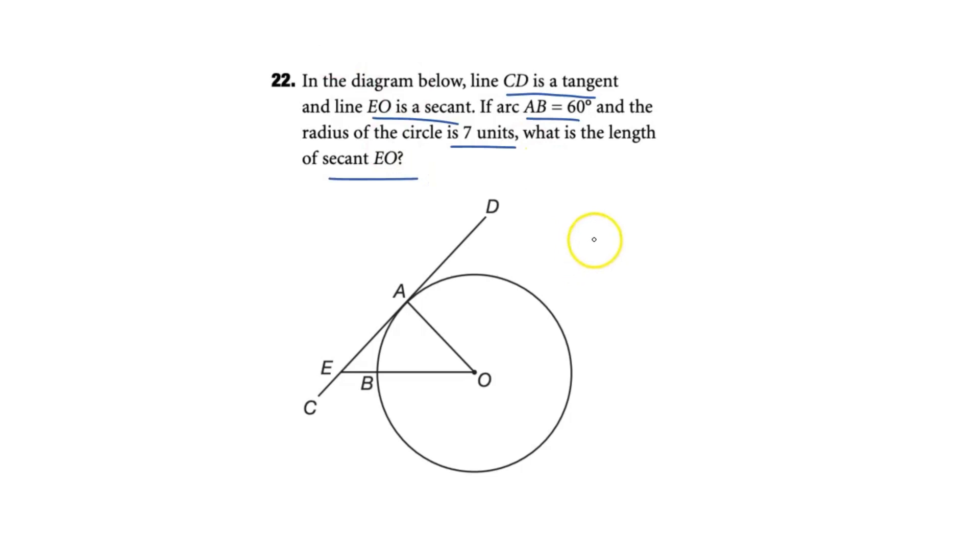So for this problem, let's first look at what is given. Arc AB is 60 degrees. And by the way, there's multiple ways to solve this. It's just my way. If arc AB is 60 degrees, so this arc right here is 60 degrees, well, then we can just extrapolate that this angle AOB is also 60 degrees. Okay, cool. So next part, what is given?